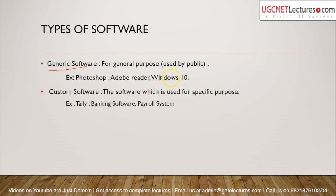Examples of generic software include Adobe Reader, Windows 10, and antivirus programs — these are product-based softwares developed for the general public. They are not for special purposes; they serve common requirements like editing photos or preparing documents. MS Office is also a general purpose, generic software.